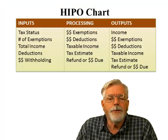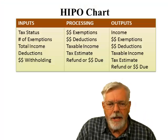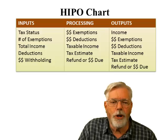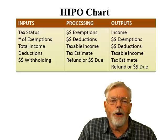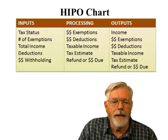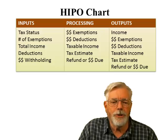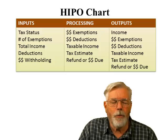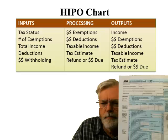Let's analyze the program. Here's a HIPO chart — Hierarchical Input Process Output. The inputs are: tax status, number of exemptions, total income, deductions, and the amount of withholding.